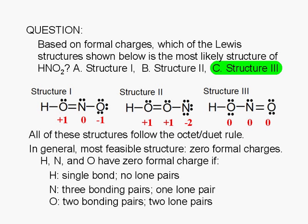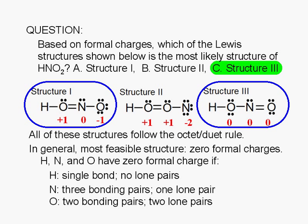The formal charges in structure 1 are okay. Actually, structures 1 and 3 are resonance structures. They have the same connectivity, only the electron distribution is different.